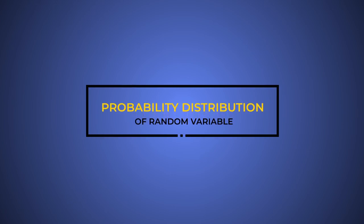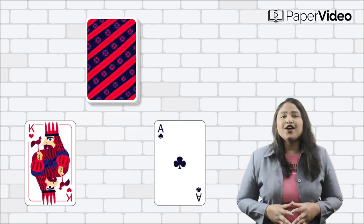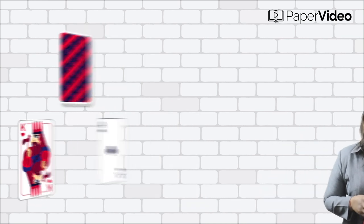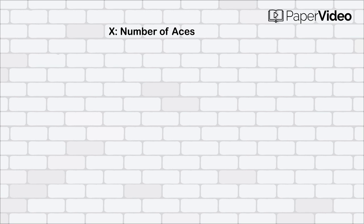Probability distribution of a random variable. Consider an experiment of drawing two cards successively with replacement from a well-shuffled deck of 52 cards. Let's denote variable X as the number of aces.